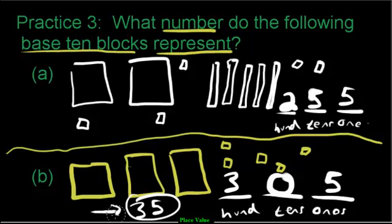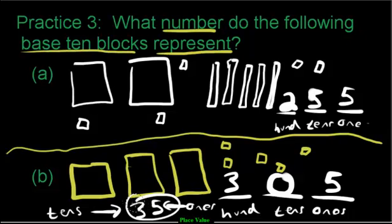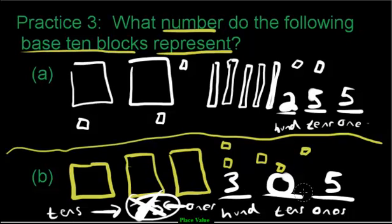If you had written thirty-five without the zero, it would cause a problem. Look at the place values: you'd have a five sitting in the ones and a three sitting in the tens - that number says thirty-five. But when we look at the picture, there isn't thirty-five, there's three hundred five. Writing thirty-five would be absolutely wrong. Well done, everybody - that's lesson one in chapter two. We're going to be learning how to represent numbers in different ways. Job well done, keep working hard, and I'll see you in the next lesson.